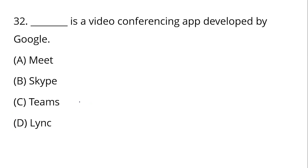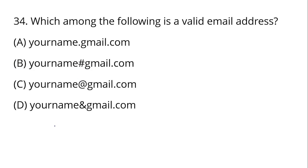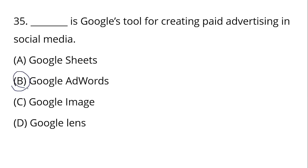Google Meet is a video conferencing app developed by Google. Microsoft Teams is provided by Microsoft. The block of text inserted automatically at the end of an email message is called a Signature. URL stands for Uniform Resource Locator. A valid email address is in the format yourname@gmail.com — always with the @ symbol. Google Adwords is a Google tool for creating paid advertisements on social media — Option B.